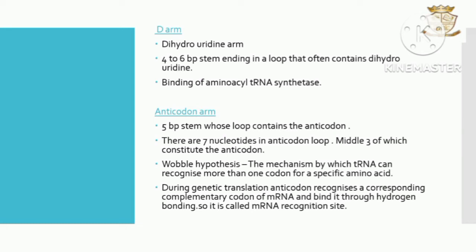During genetic translation, the anticodon recognizes a corresponding complementary codon on mRNA and binds to it through hydrogen bonding. For this reason, the anticodon arm is called the mRNA recognition site.